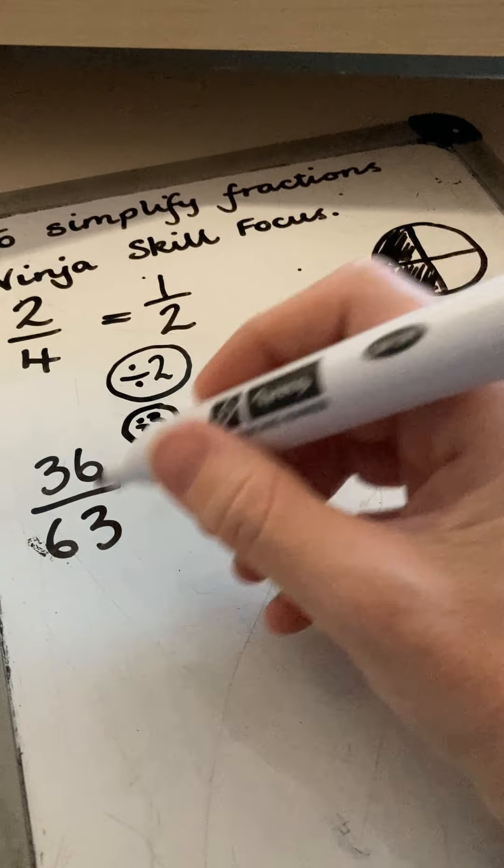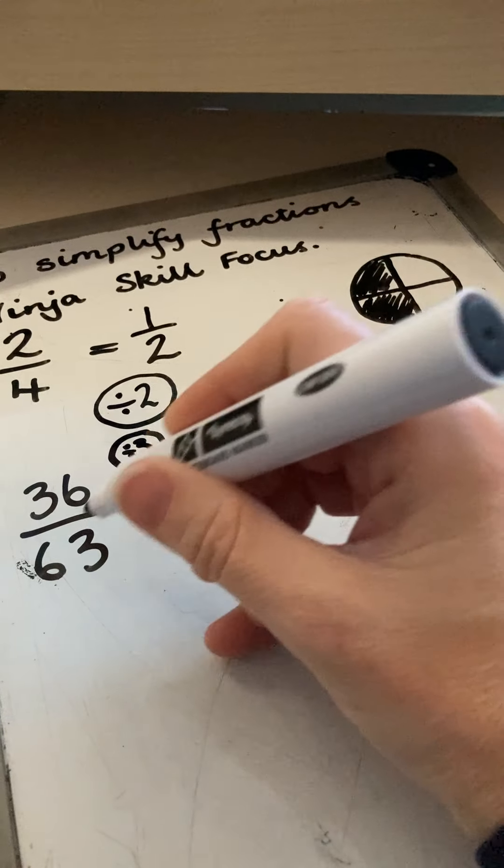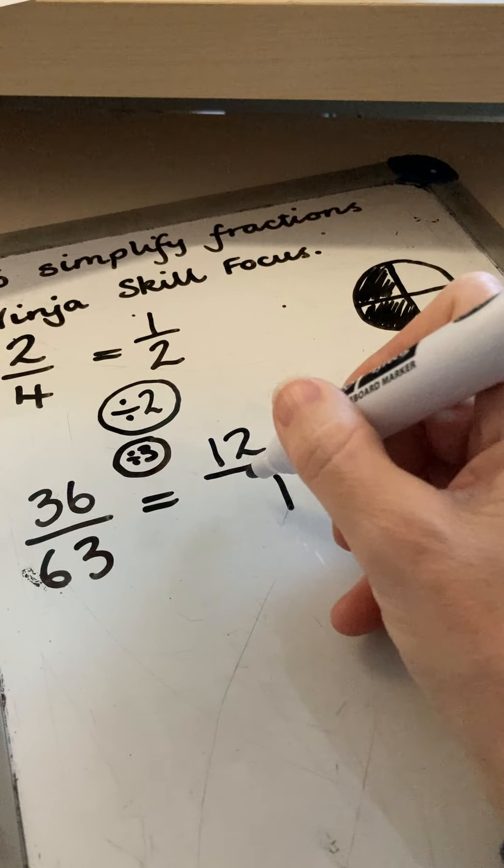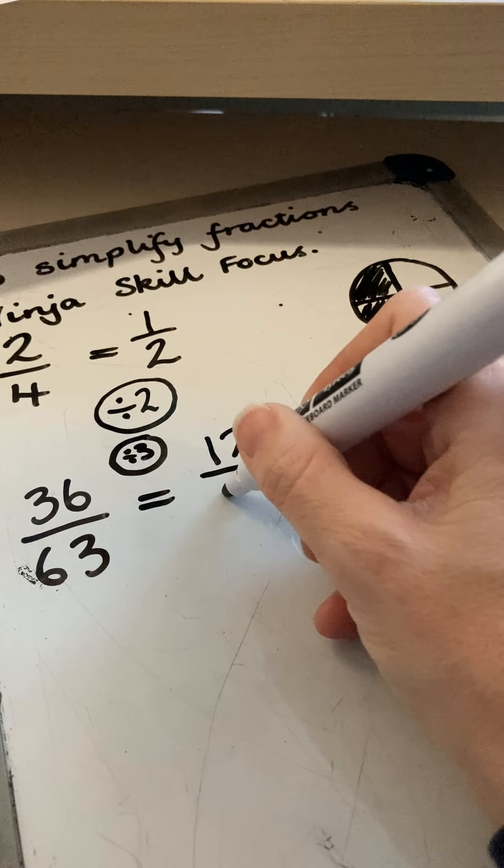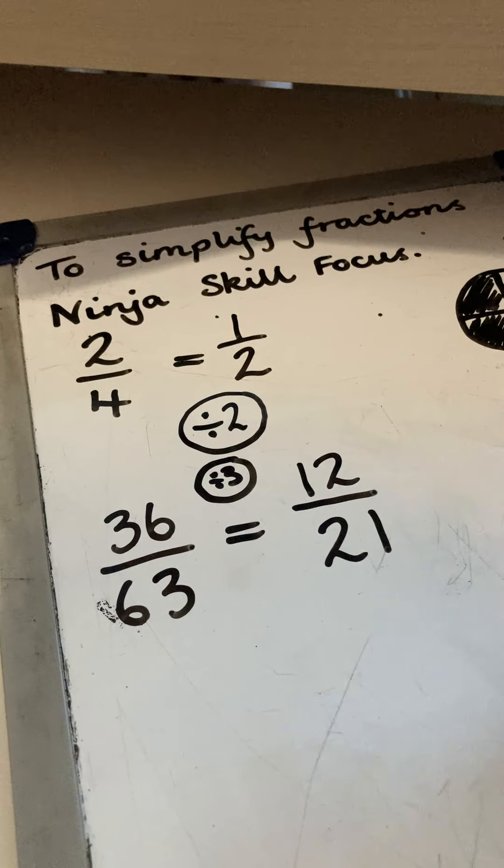And I know that I can divide three into three and it's one. Six divided by three, six tens divided by three is going to be two tens. So I've now got 12 over 21.